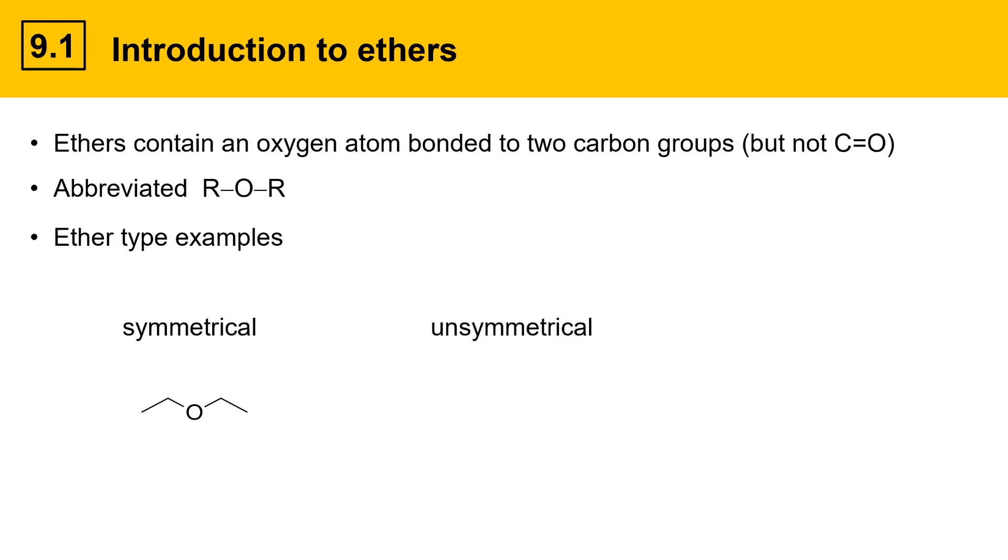Then there are unsymmetrical ethers. Here's an example of one called methyl tertiary butyl ether, where there's a methyl and tert-butyl group on different sides of the oxygen. Finally, there's also cyclic ethers, where the oxygen is within a ring. Here's an example called tetrahydrofuran, or THF, where it's an oxygen in a five-membered ring.